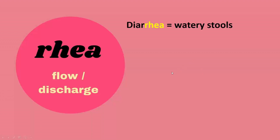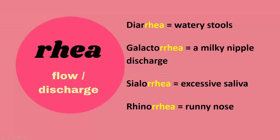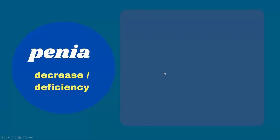Next, suffix rhea refers to flow or discharge. Examples: diarrhea is watery stools, galactorrhea is milky nipple discharge, sialorrhea is excessive saliva, rhinorrhea is runny nose.